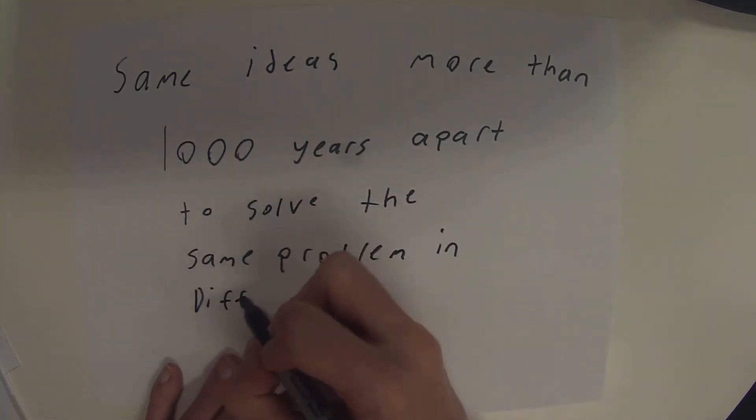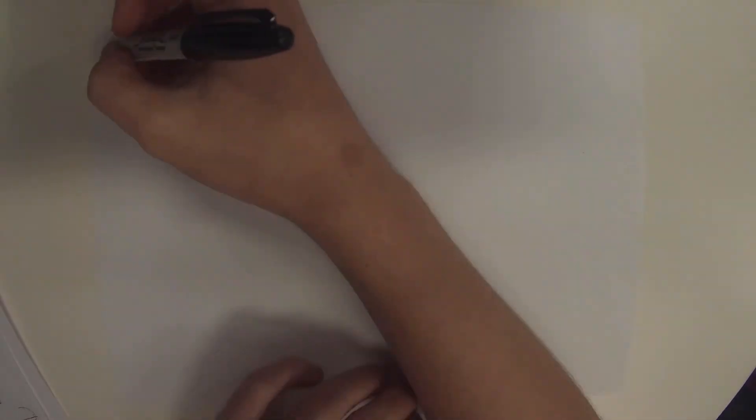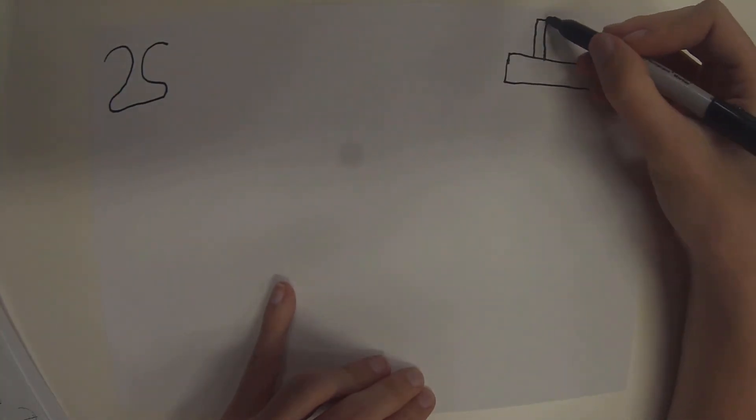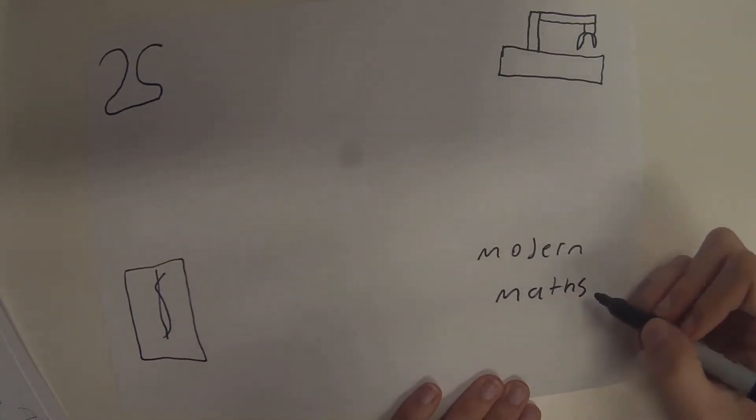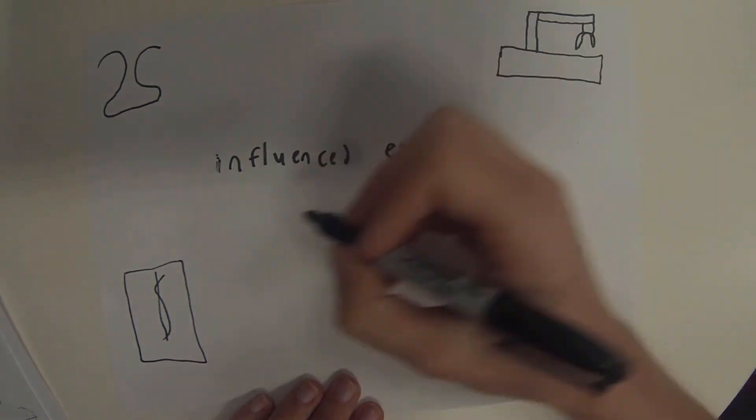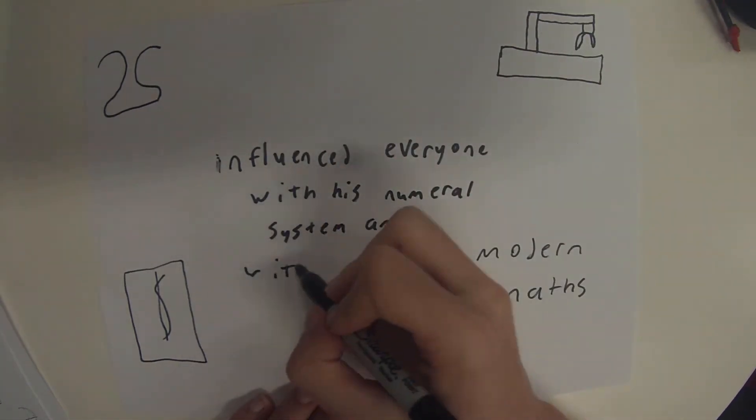Another influence that Al-Khwarizmi did is the Arabic numeral system, and that influenced everyone. Every single mathematician these days uses the form of the Arabic numeral system. Scientists, engineers, modern maths, businessmen all use it.